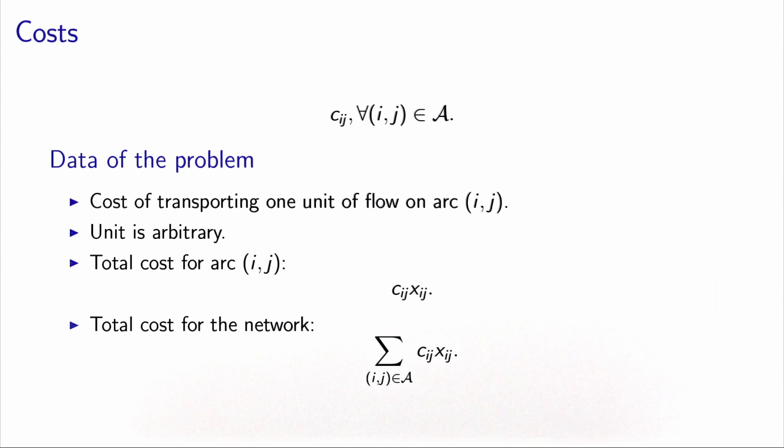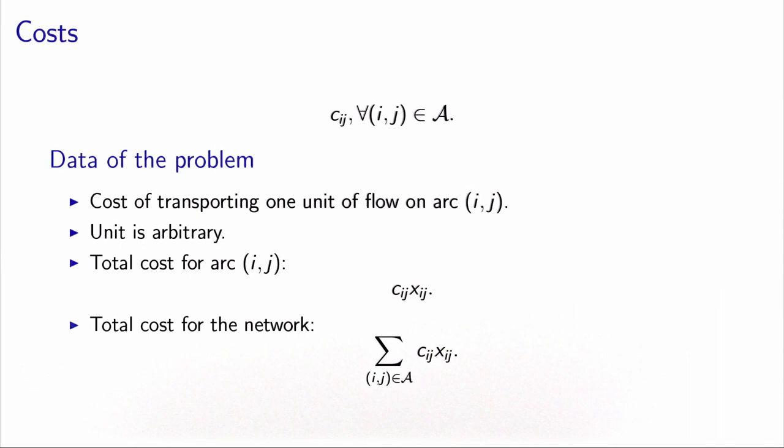We also assume link additivity, meaning the total cost for the whole network is the sum over all arcs of the cost of each arc. The unit is arbitrary, but it is not necessarily easy to identify.